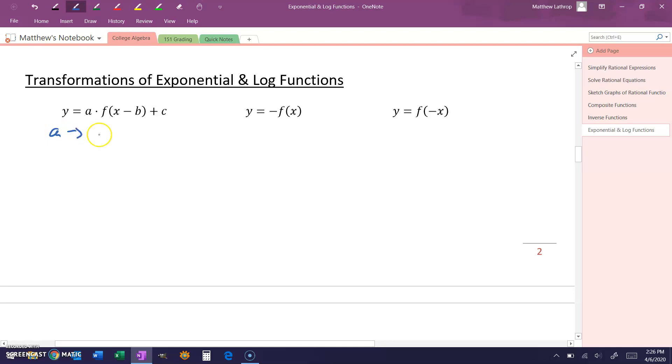Where a represents a vertical stretch being applied to our graph. Our value for b represents a horizontal shift to the right. And what we want to keep in mind is that if instead we had the expression x plus b, then that would be a shift to the left.